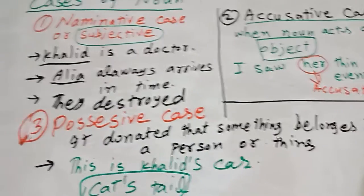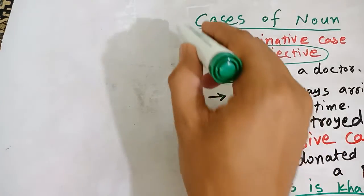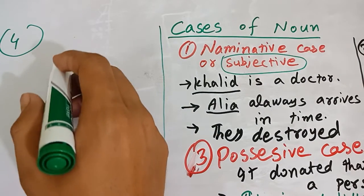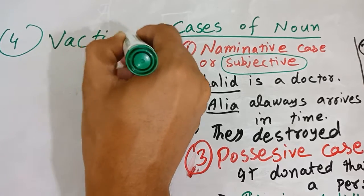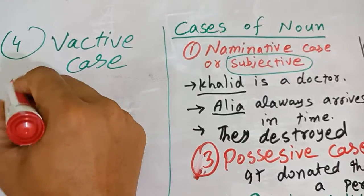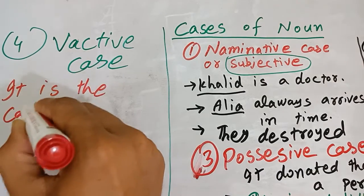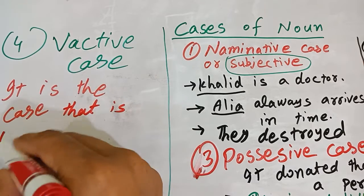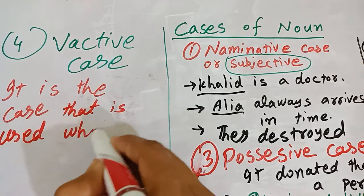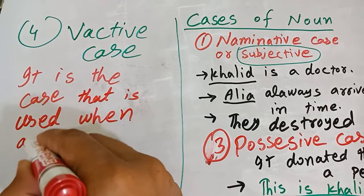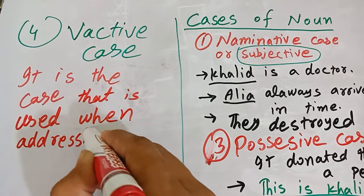Now I will discuss the last case of the noun, which is the fourth case — the vocative case. It is the case that is used when addressing a person or thing.